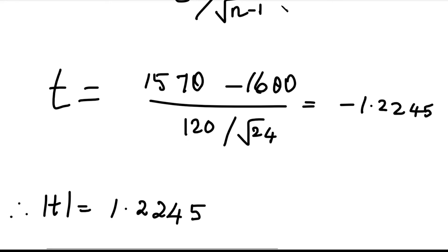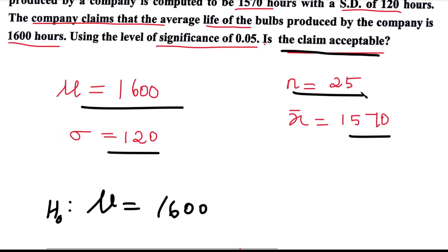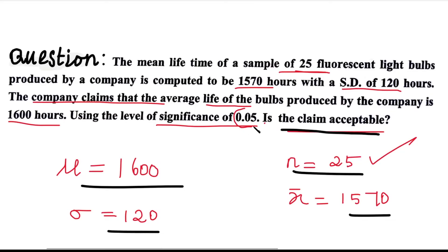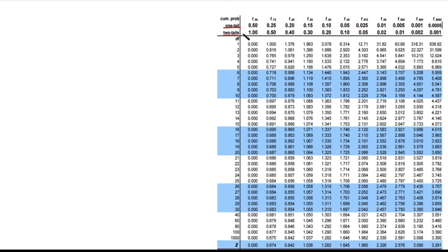Next, we look up the table value of t. Three things are needed: degrees of freedom, level of significance, and whether it is one-tail or two-tail. In this problem, we have a two-tailed test and level of significance is 0.05. The degrees of freedom is n − 1 = 24.